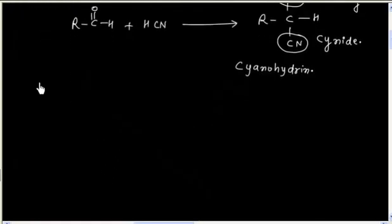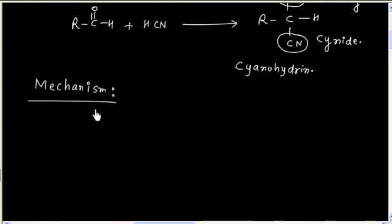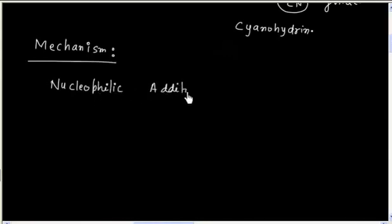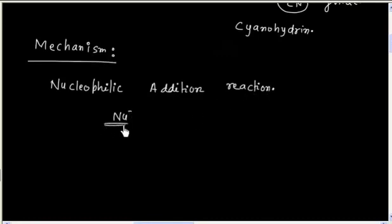Now let us consider the mechanism of this reaction. This reaction is basically a nucleophilic addition reaction. In this reaction, CN⁻ is the nucleophile — CN⁻ is acting as the nucleophile.